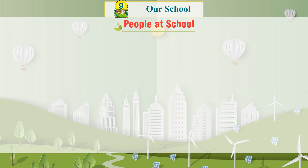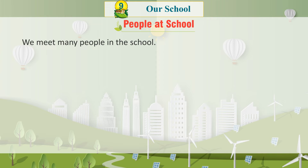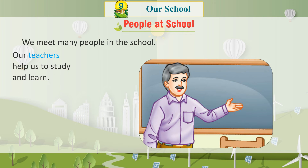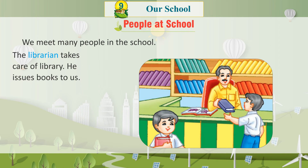People at school. We meet many people in the school. The principal is the head of the school; he or she makes sure that the school is running well. Our teachers help us to study and learn. The librarian takes care of the library and issues books to us.